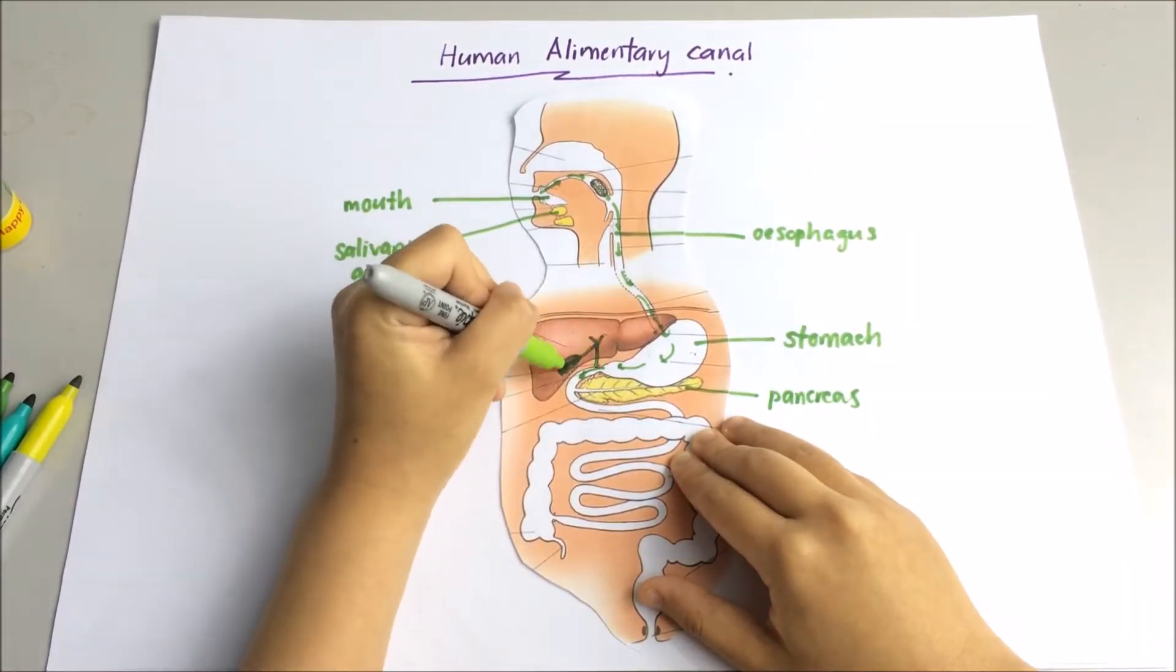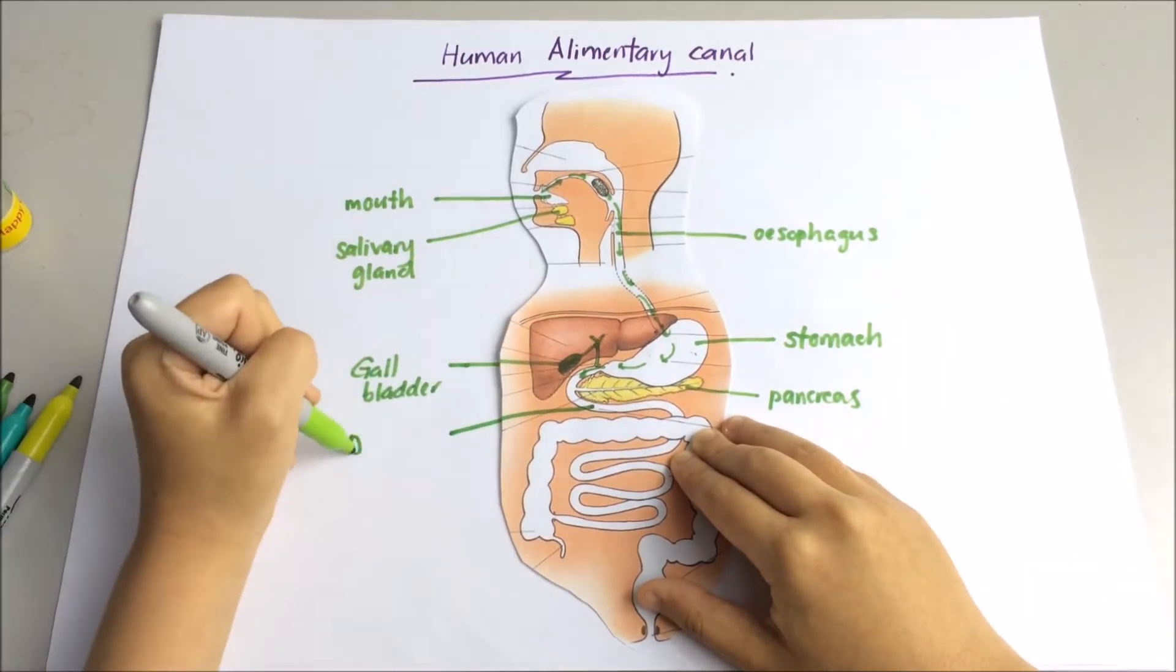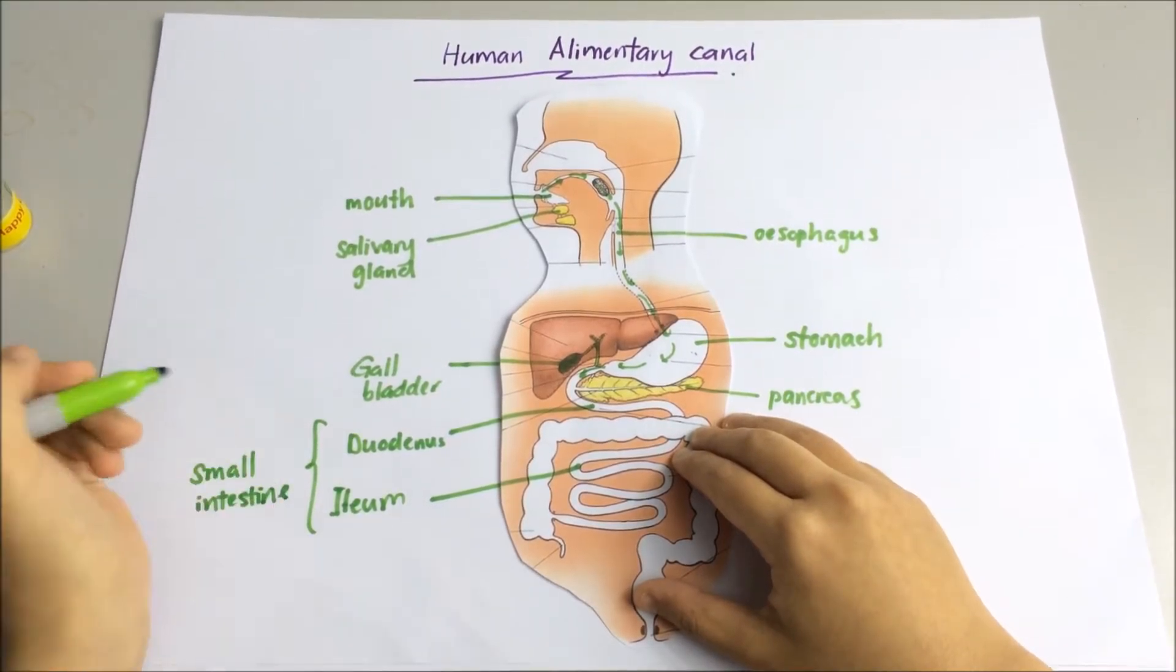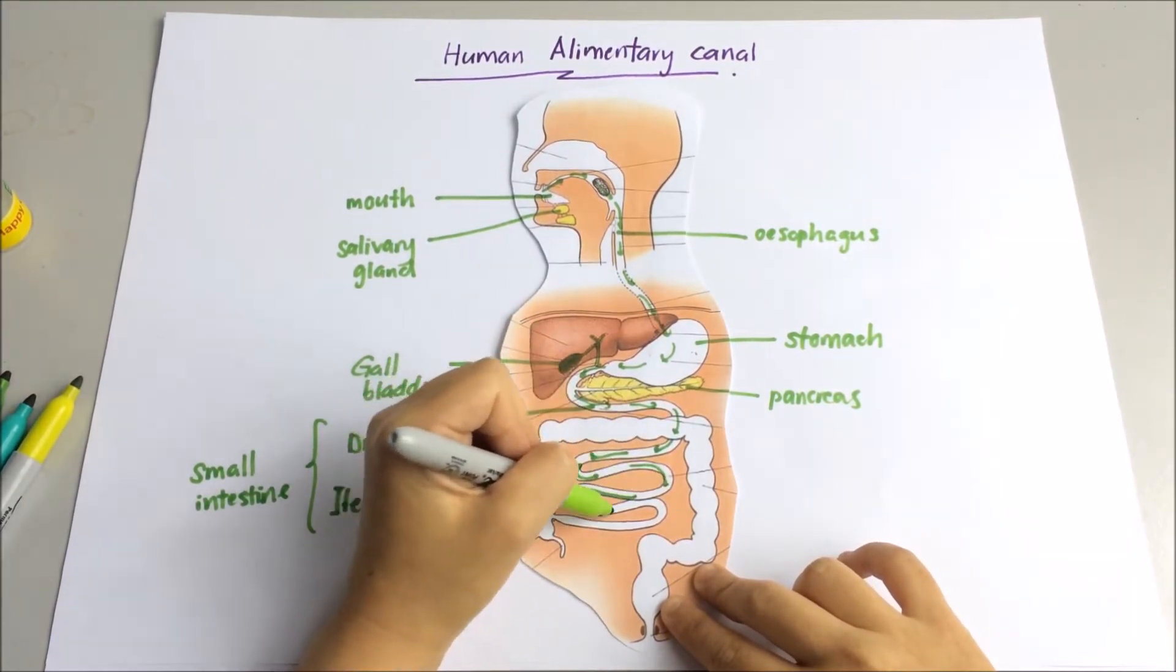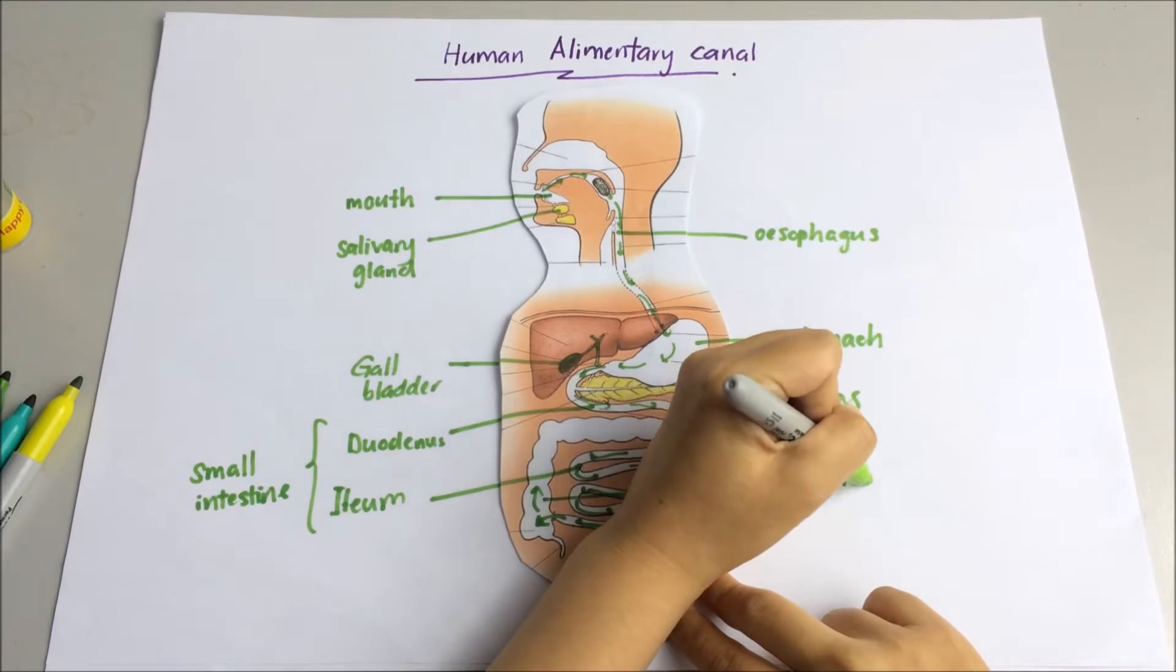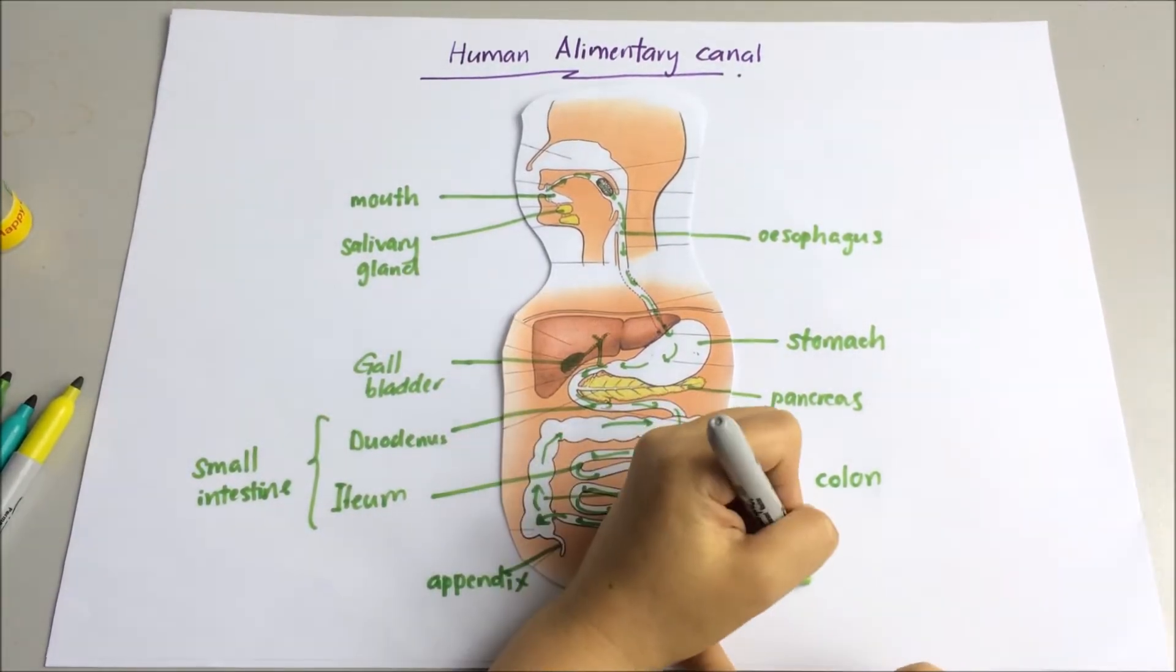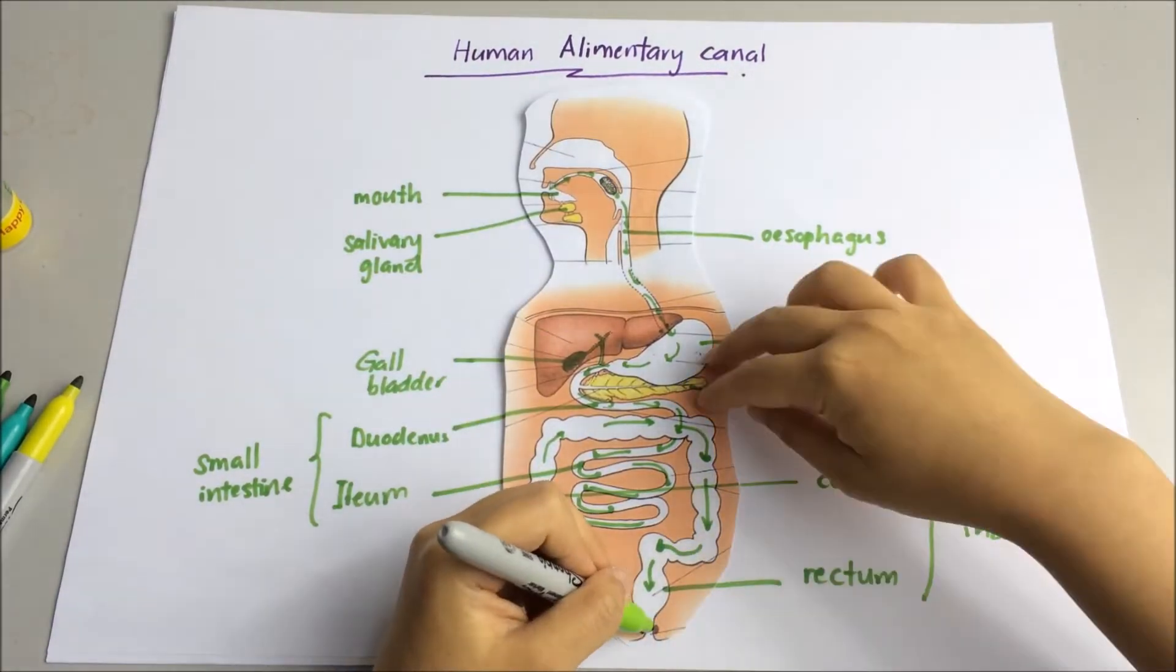I will talk more about the function of each organ later. This is the gallbladder and duodenum, which is the first part of our small intestine, followed by ileum. Both ileum and duodenum are part of the small intestine. After the small intestine, there will be large intestine, which comprises of the colon and the rectum. Then the human digestive tract will end with anus.